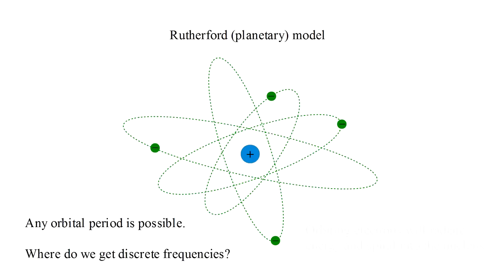But even more troubling is that electromagnetic theory predicts that electrons in such an atom will rapidly radiate away their orbital energy and crash into the nucleus.